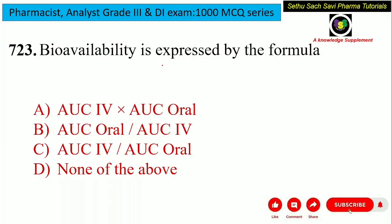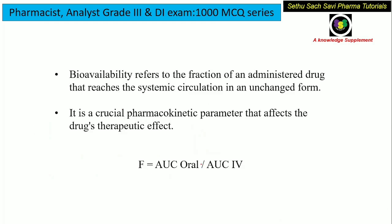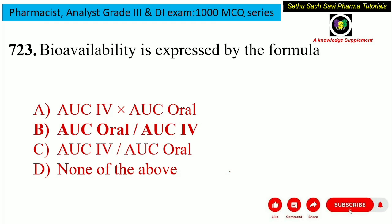Now, bioavailability is expressed by the formula. Is it AUC IV × AUC oral, AUC oral / AUC IV, AUC IV / AUC oral, or none of the above? Bioavailability means it is the fraction of administered drug that reaches the systemic circulation in the unchanged form. This is very crucial for pharmacokinetic parameters. So the formula F, that is bioavailability, is AUC oral / AUC IV. So the answer is option B.